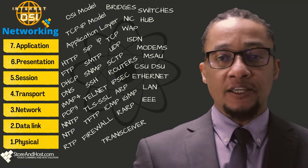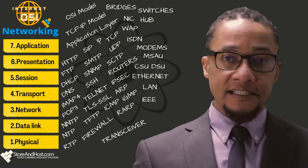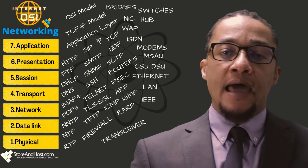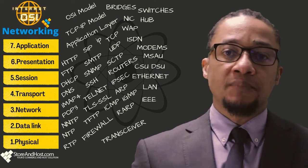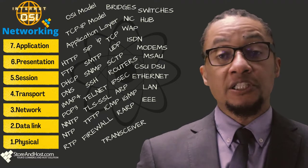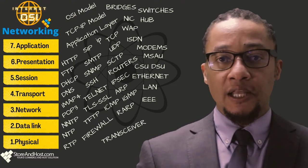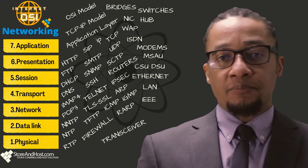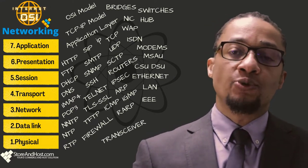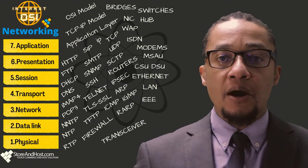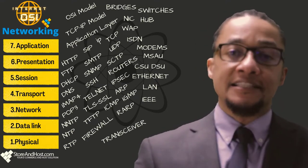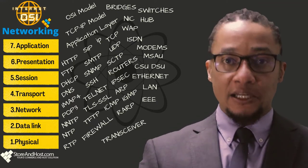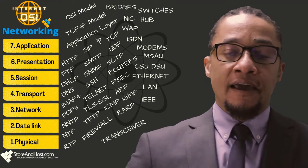The internet emerged in the United States in the 1970s and didn't really become visible to the general public until the early 1990s. By 2020, approximately 4.5 billion people — more than half of the world's population — were estimated to have access to the internet. The internet provides a capability so powerful and general that it can be used for any purpose that depends on information, and it's accessible by every individual who connects to one of its constituent networks.